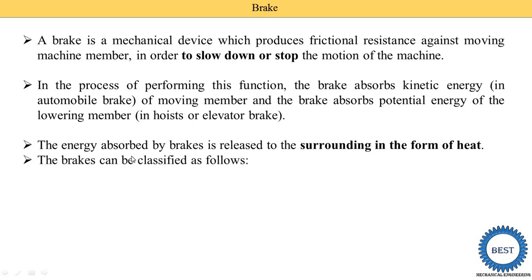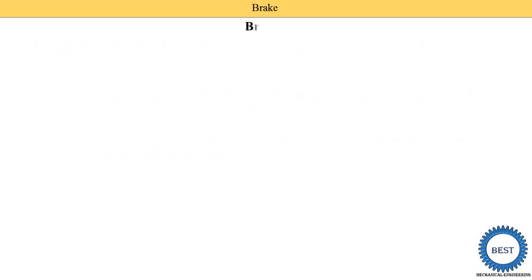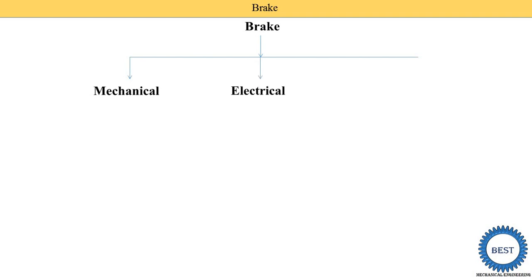The brake can be classified as follows. Brakes are generally classified into three categories: first is the mechanical brake, second is the electrical brake, and third is the hydraulic brake. In a mechanical brake, mechanical energy is used; in an electrical brake, electrical energy is used; and in a hydraulic brake, hydraulic energy is used — meaning some oil, piston, and cylinder arrangement is used.